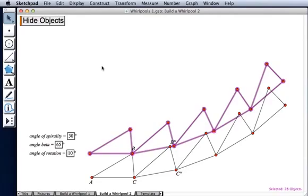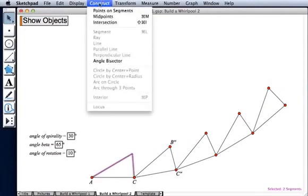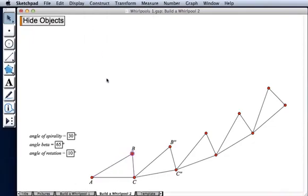To continue, I'm going to hide these triangles. Now I need to make sure that I have vertex B back again. So there it goes. And I'm going to connect B and B double prime to form this segment.